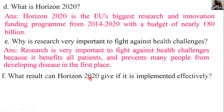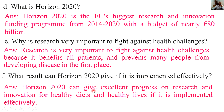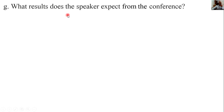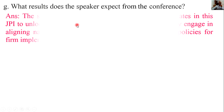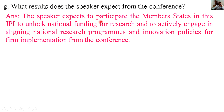What result can Horizon 2020 give if it is implemented effectively? Horizon 2020 can give excellent progress on research and innovation for healthy diets and healthy lives if implemented effectively. What result does the speaker expect from the conference? The speaker expects member states to participate in the JPIs to unlock national funding for research and to actively engage in aligning national research programs and innovation policies.